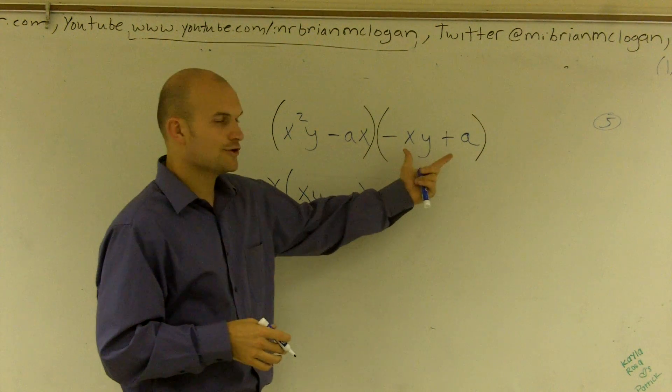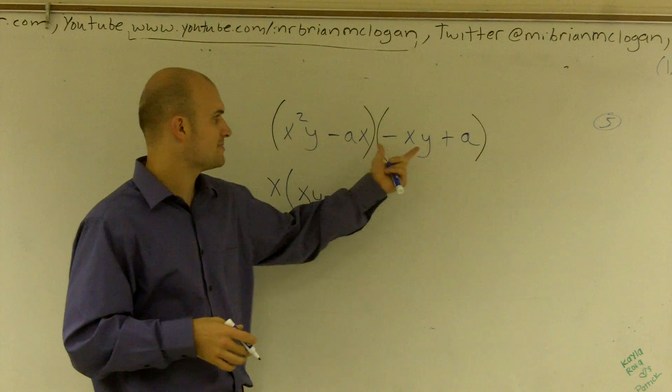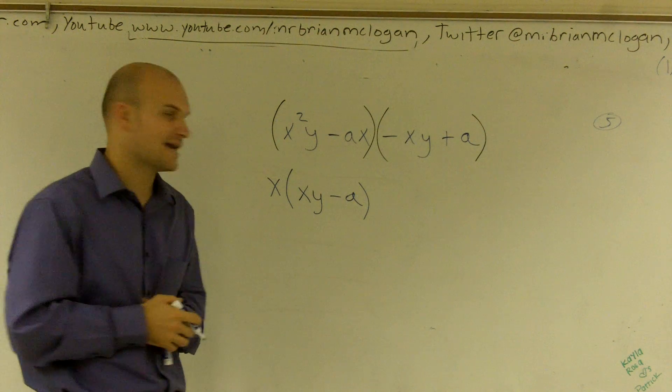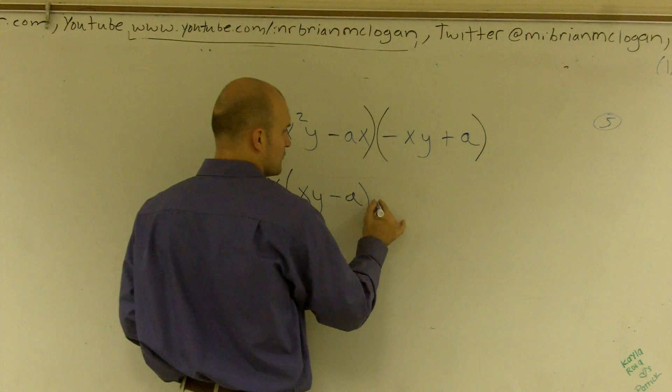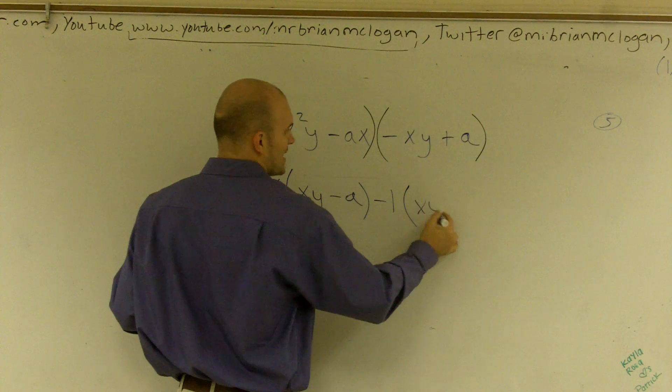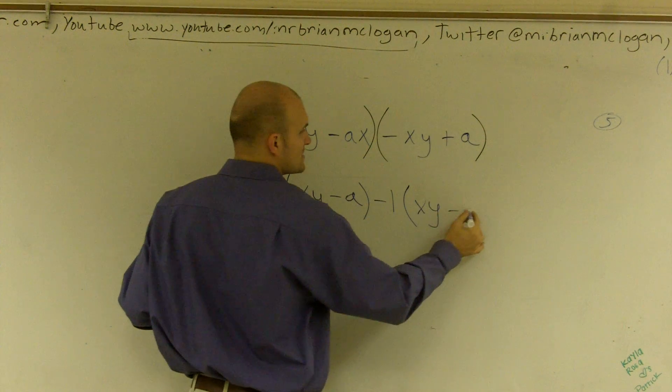Now here, your goal is to kind of get the exact same thing out of this equation as in this one. So what I'm going to want to factor out of here is a negative 1. If I factor out a negative 1 here, what I'll be left with is this now becomes positive xy, and this becomes a negative a.